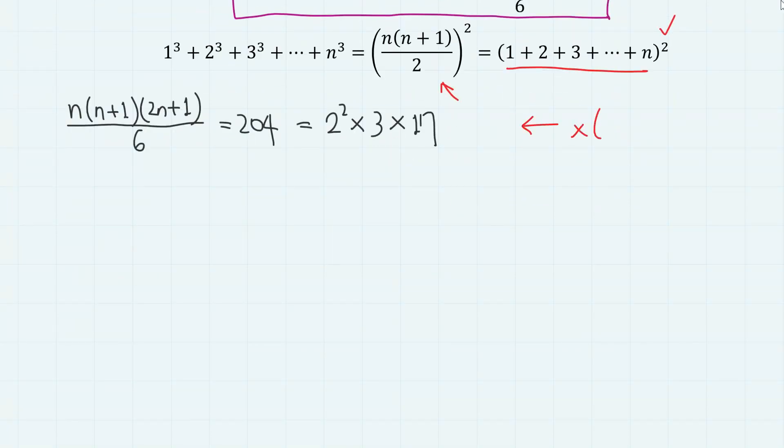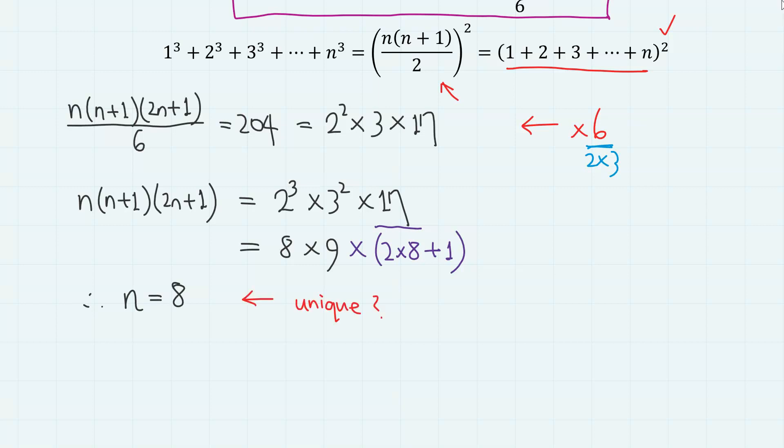So if we multiply 6, which is 2 times 3, we have n, n plus 1, 2n plus 1, equals 2 cubed times 3 squared times 17. Here, notice that we have 8 times 9, and 17 is 2 times 8 plus 1. So we have n, n plus 1, and 2n plus 1.